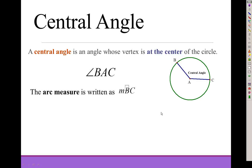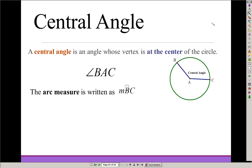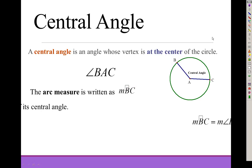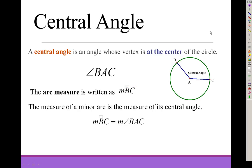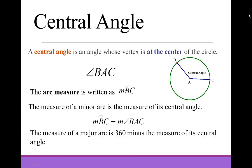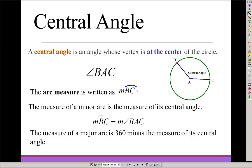The arc measure can be written as the measure of arc BC — you put a little M in front of it. The relationship is that the measure of the arc is equal to the measure of its central angle. So if this angle is 100 degrees, then the arc measure is also 100 degrees.